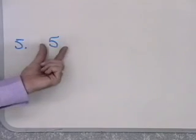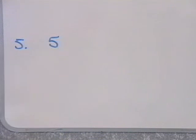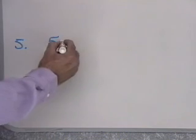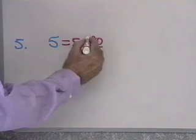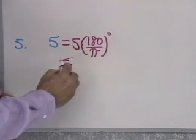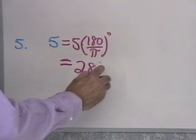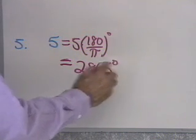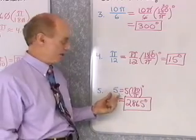Next problem: convert 5 (with no units written) to degrees. No units shown means radians, so take 5 and multiply by 180 over π degrees. That's 5 times 180 divided by π. Using a calculator, this gives approximately 286.5 degrees. So 286.5 degrees is the decimal approximation to 5 radians.